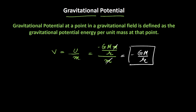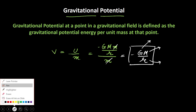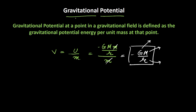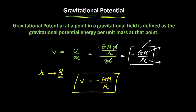So this is the expression for gravitational potential, where capital G is the universal gravitational constant, capital M is the mass of Earth, and R is the distance of that particular mass from the center of the Earth. Now if you want to find the gravitational potential on the surface of Earth, then R becomes equal to the radius of Earth, capital R, and the expression for V comes out to be minus GM divided by capital R, where R is the radius of Earth. I hope the formula for gravitational potential is clear to you. See you in the next video, bye-bye.